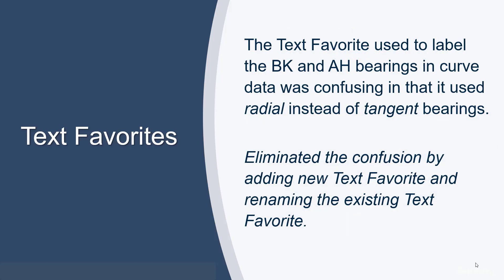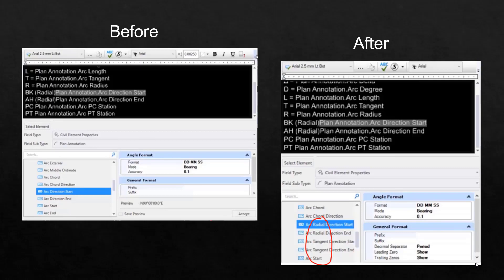Another area that we made a small change was in the area of a text favorite used to label the back and ahead bearings. This was a confusing text favorite in that it was not clear that it used radial instead of tangent bearings. We eliminated this confusion by adding a new text favorite and renaming the existing one.